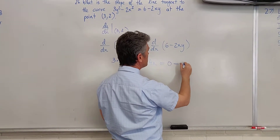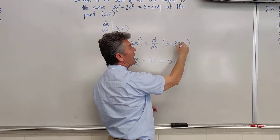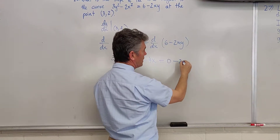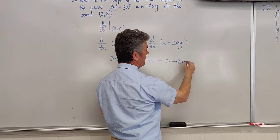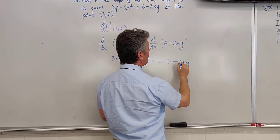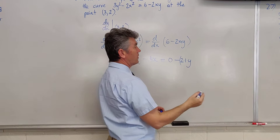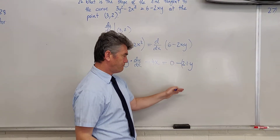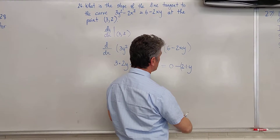So, minus 2 — the derivative of x is just equal to 1 — so 2 times 1 times y. Then there is the derivative of y. Here is where a lot of people go wrong: that minus sign needs to be distributed.